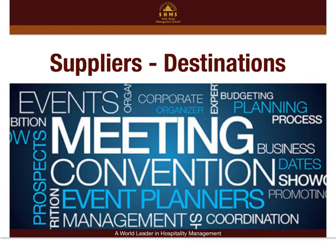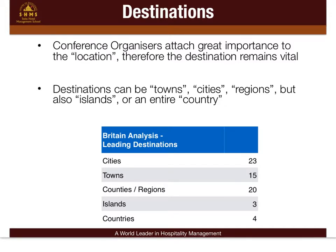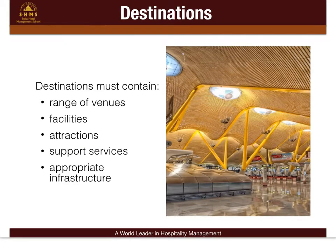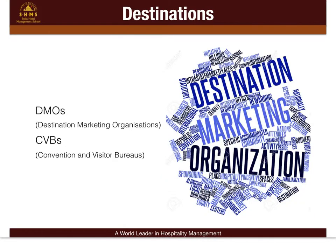Apart from hotels and venues, suppliers can now be destinations in themselves. When doing MICE, buyers put a lot of importance on choosing the location. Destinations can be towns, cities, regions, islands, or an entire country, and must contain a range of venues, facilities, different attractions, support services, and the appropriate infrastructure. DMOs — Destination Marketing Organizations — and CVBs — Convention and Visitors Bureaus — promote the destination, highlight its strengths and facilities, and are involved in product development and business generation, really helping the destination to attract MICE.